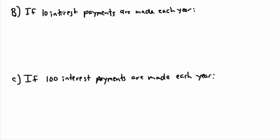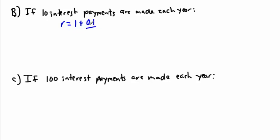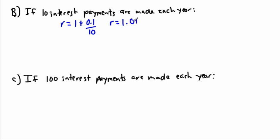Same situation, but this time we have 10 interest payments per year. We just recalculate the rate: it's 100% plus the 10% interest rate per year, but now divided by the number of payments per year, which is 10. So we take 0.1 divided by 10, which gives 0.01, meaning R equals 1.01.